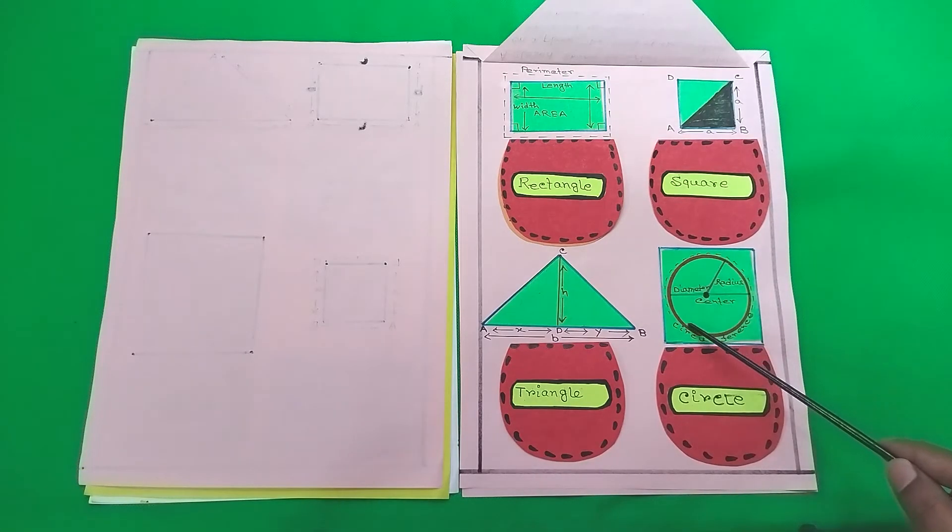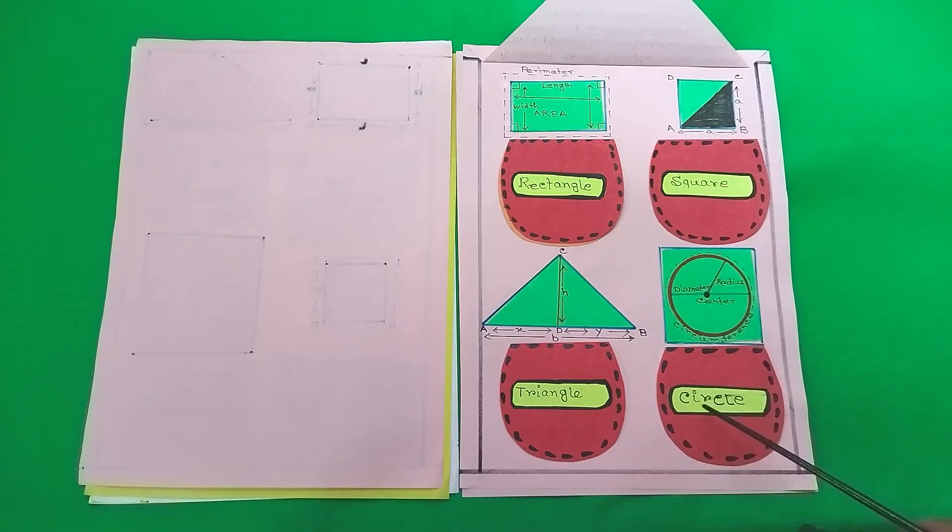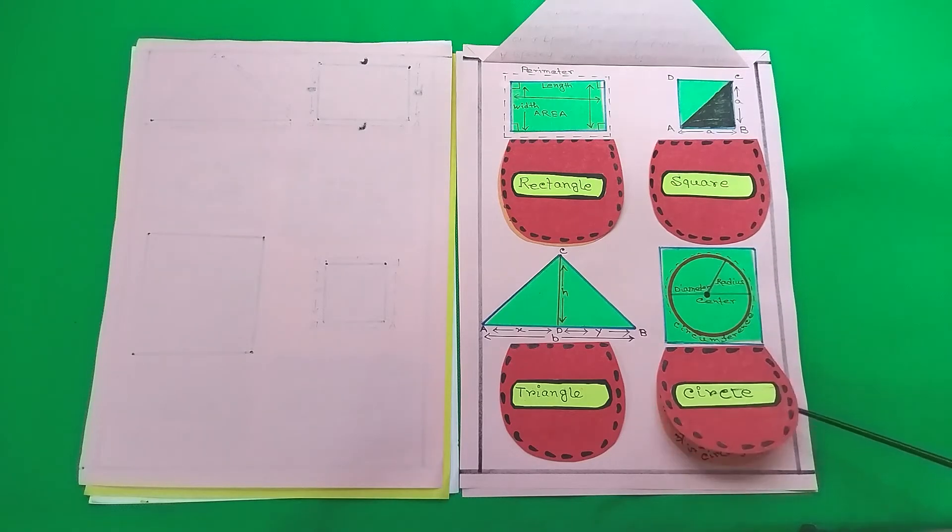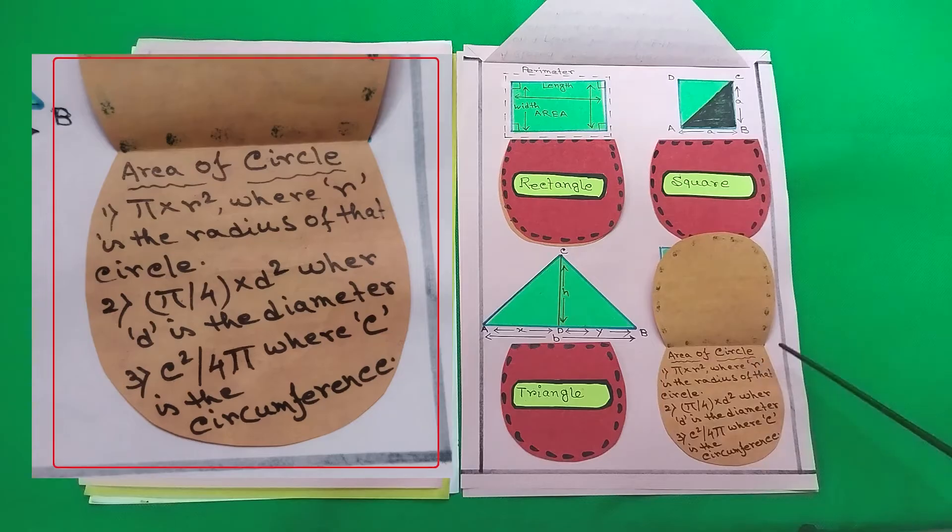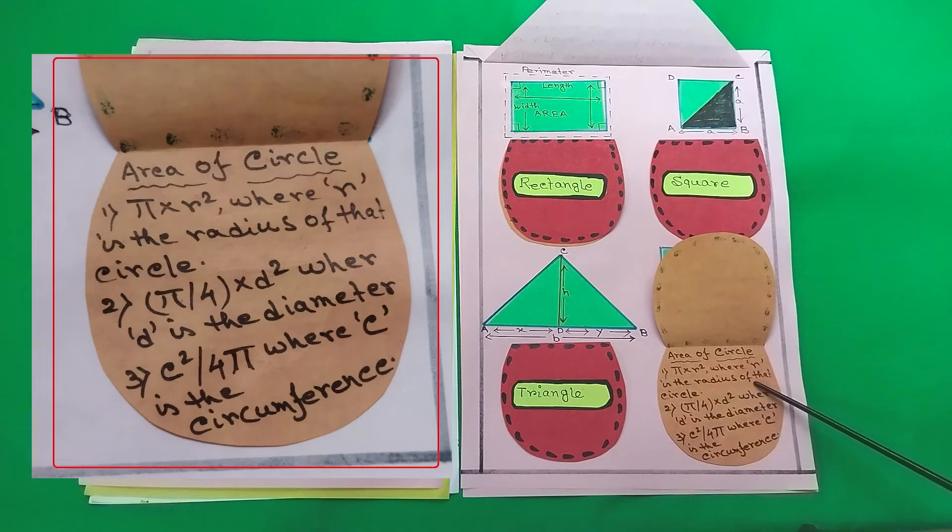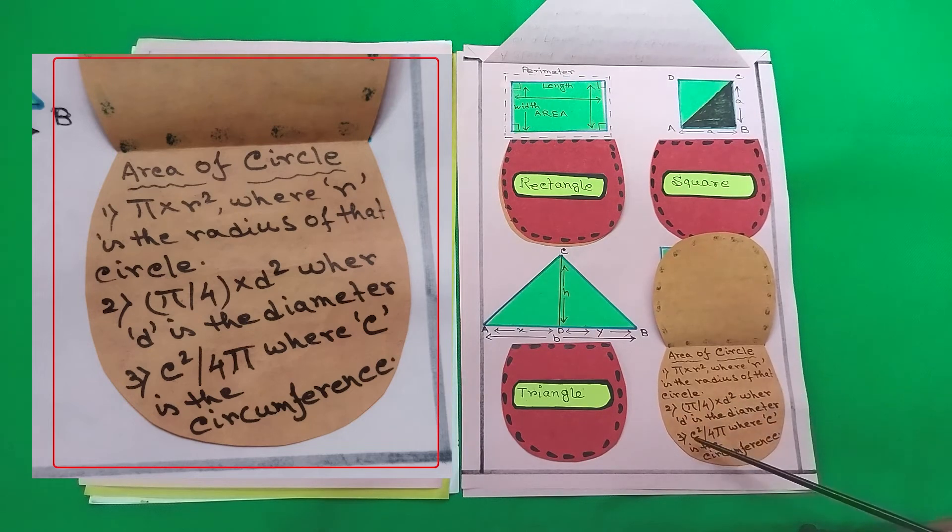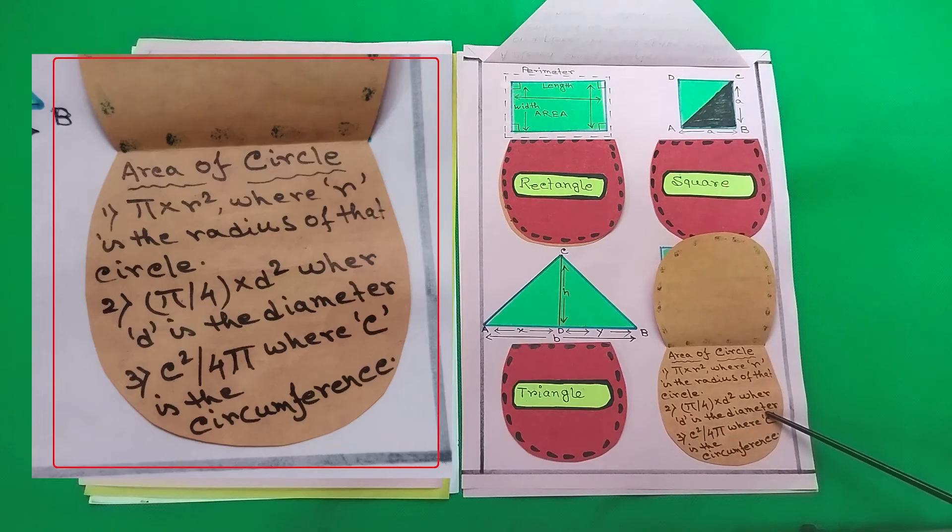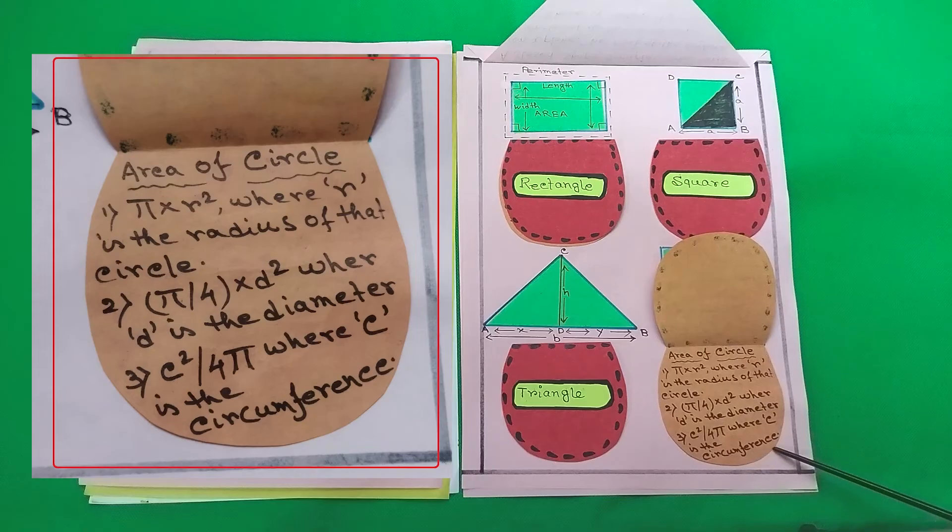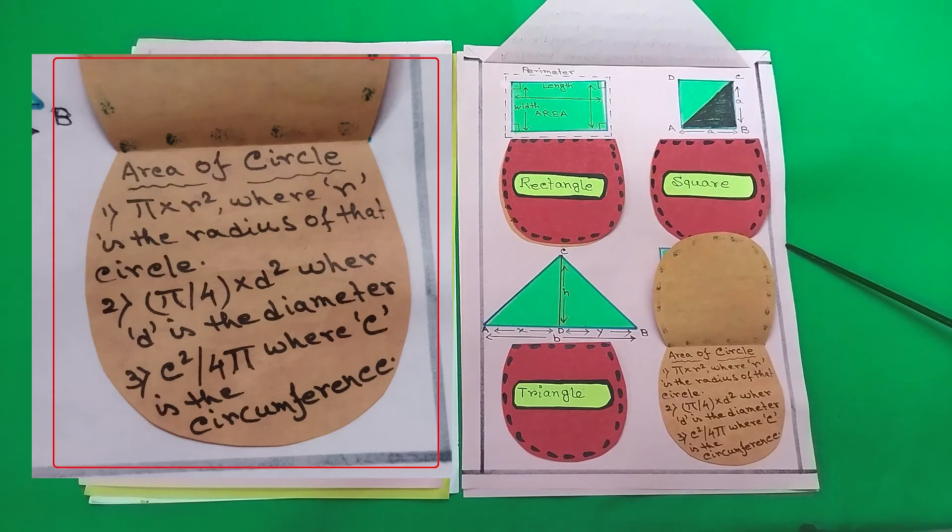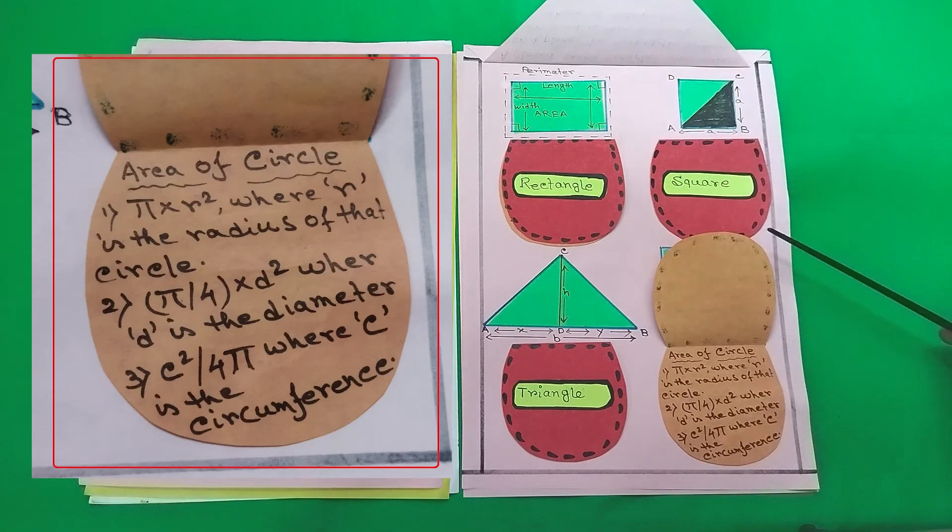So next up we have the area of a circle. A circle has three parts or four parts actually: diameter, radius, center and the outer perimeter is called the circumference. Area of a circle, number one: pi times R squared where R is the radius of that circle. Number two: pi by 4 times D squared where D denotes the diameter. Number three: C squared by 4 pi where C is the circumference.